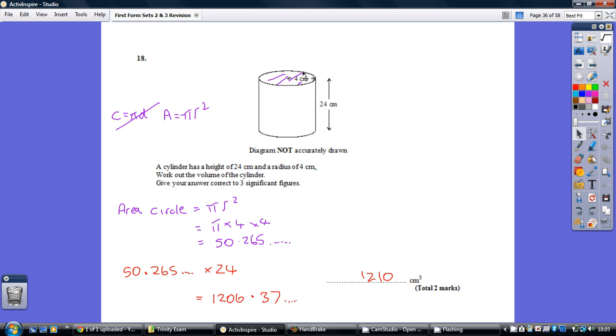Now, the area of the end bit in this situation with a cylinder is a circle. So how do we work out the area of a circle? Well, we go through our little formula. Cottage pie is delicious, apple pies are too. We don't want the cottage pie bit. We want the area formula. So the area is pi r squared.